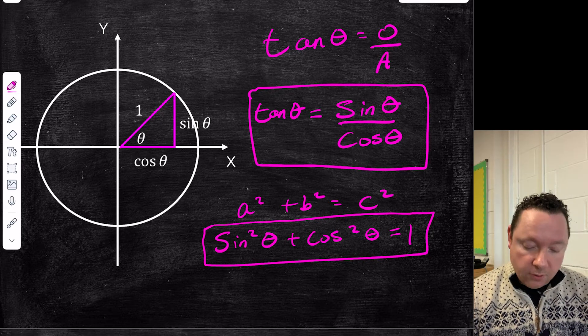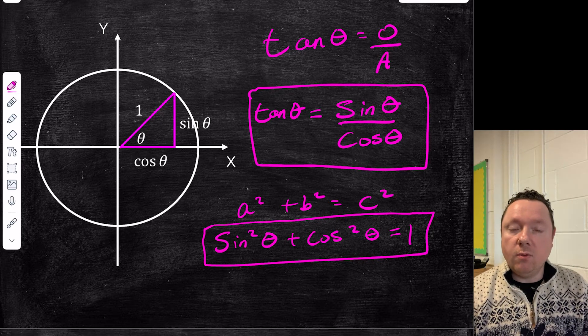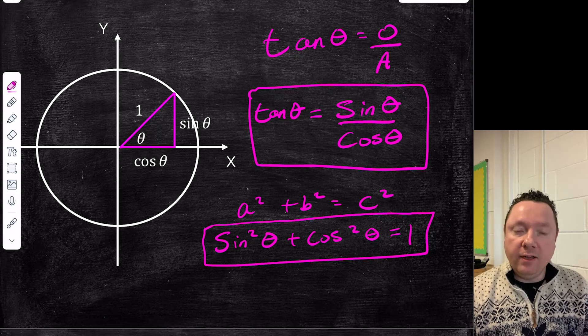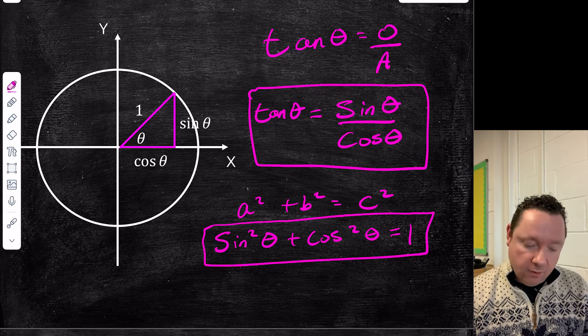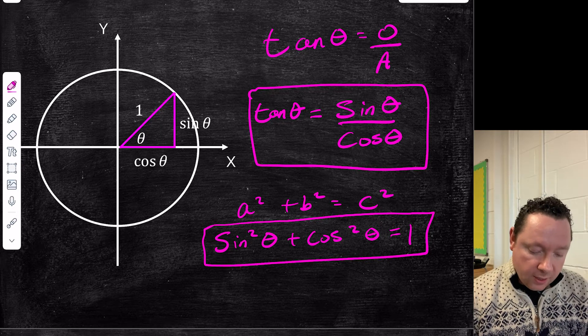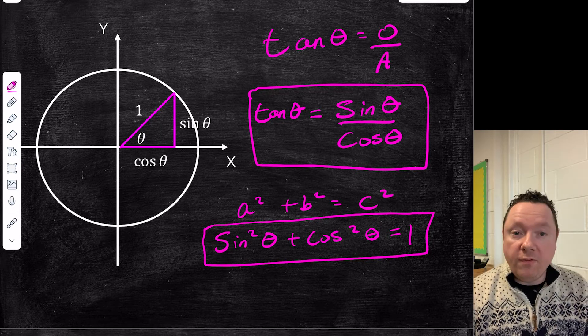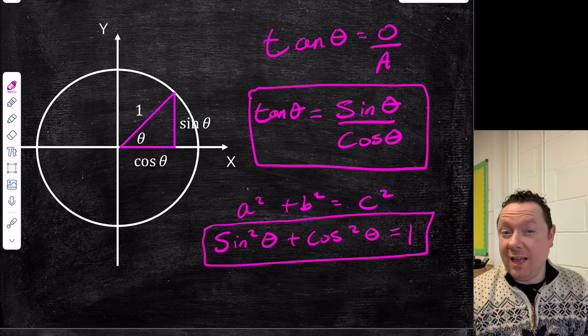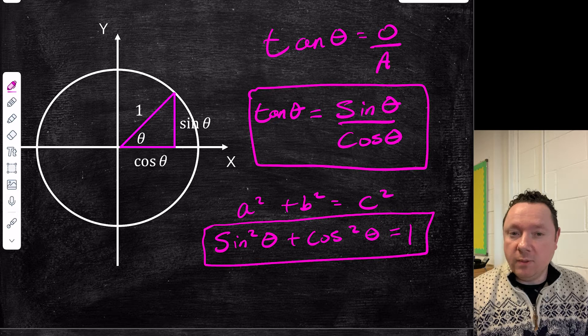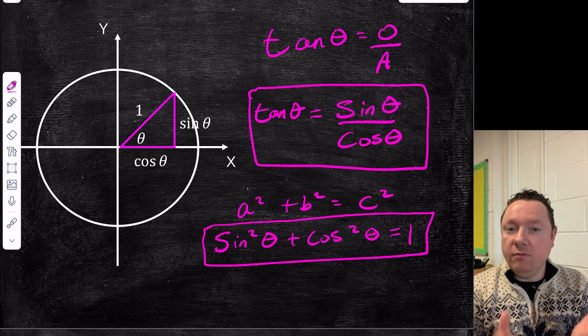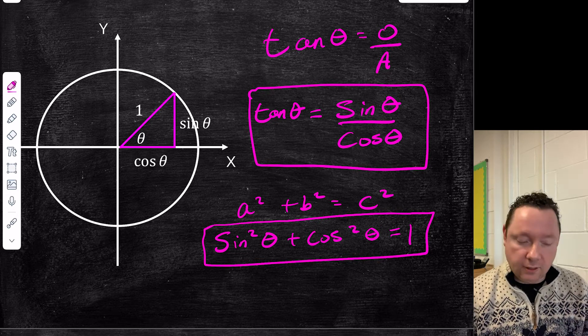Note that sine squared plus cos squared — what that means is sine theta times sine theta. We write the squared before the theta just for clarity, but it really means the sine of theta all squared.